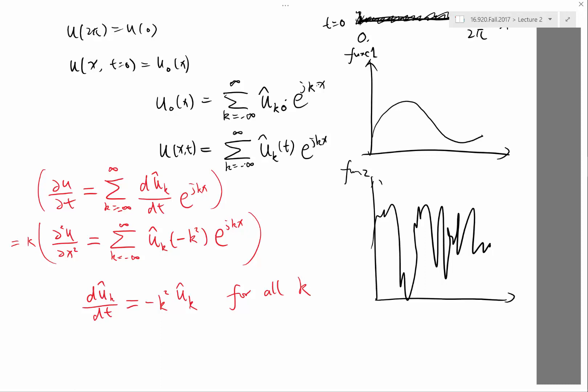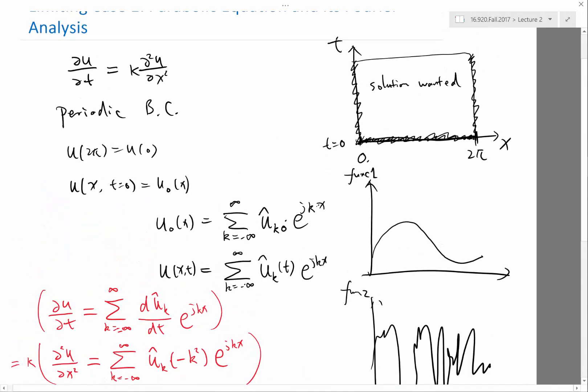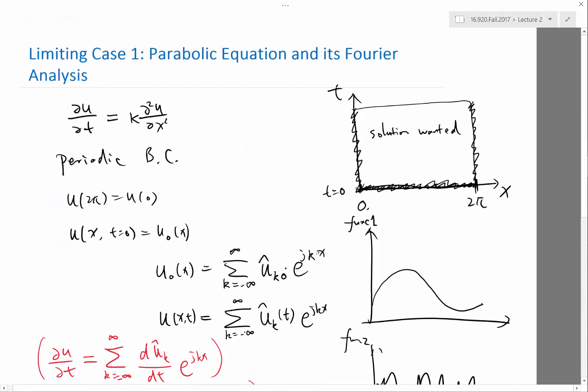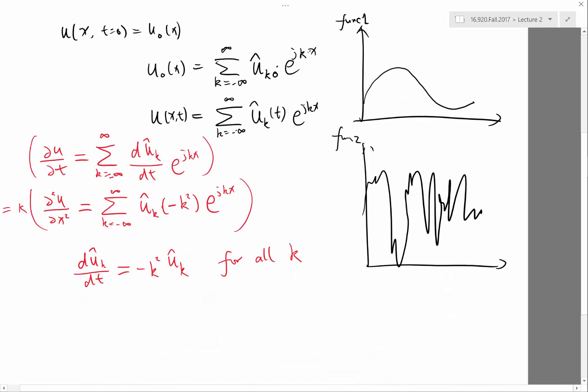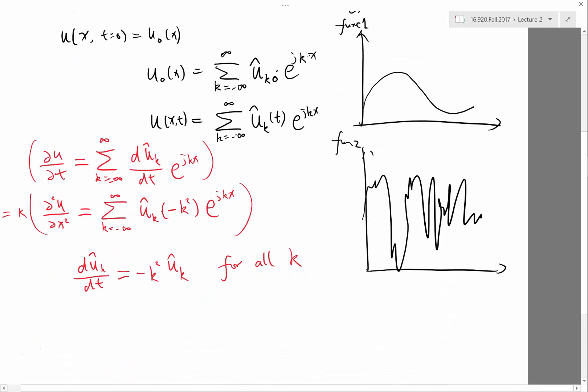What happened to the kappa that was this kappa partial squared partial x squared term? Oh, here we are analyzing a limiting case one parabolic equation where the big U term is set to zero. So it gets... oh yeah, sorry, I missed a kappa here. Thank you. Minus kappa times k square. Yeah, thank you. Anytime I do something wrong, please point that out. It's very helpful because it will help everybody.